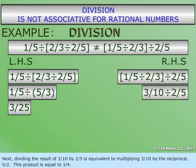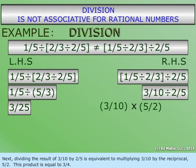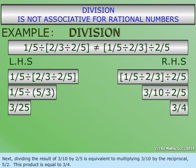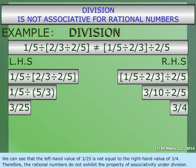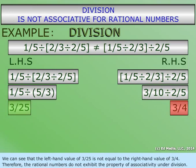Next, dividing the result of three-tenths by two-fifths is equivalent to multiplying three-tenths by the reciprocal five-halves. This product is equal to three-fourths. We can see that the left-hand value of three divided by twenty-five is not equal to the right-hand value of three-fourths.